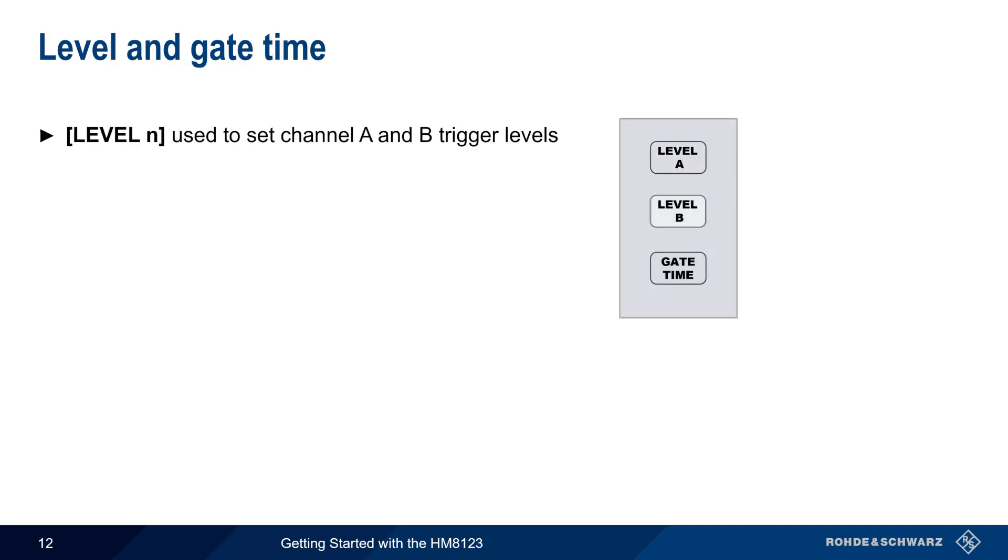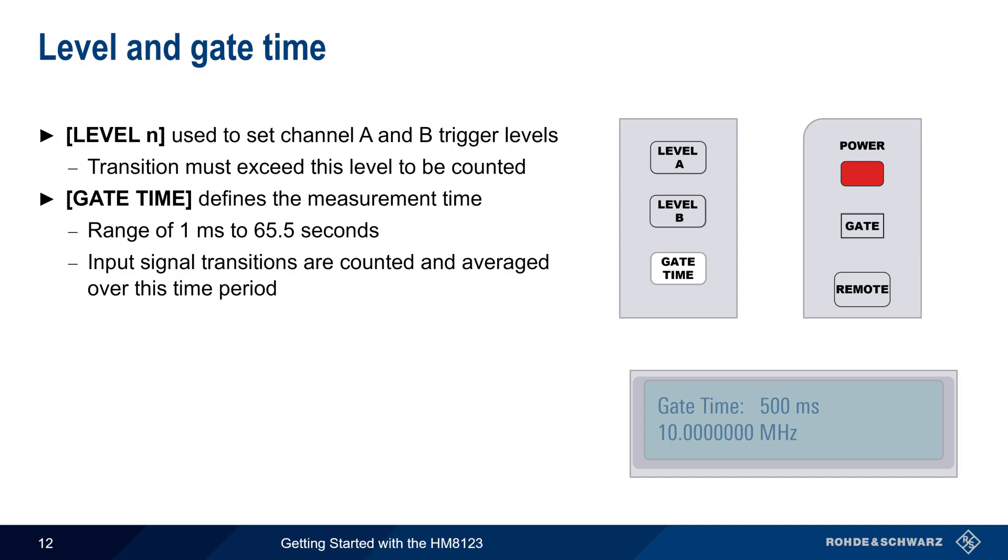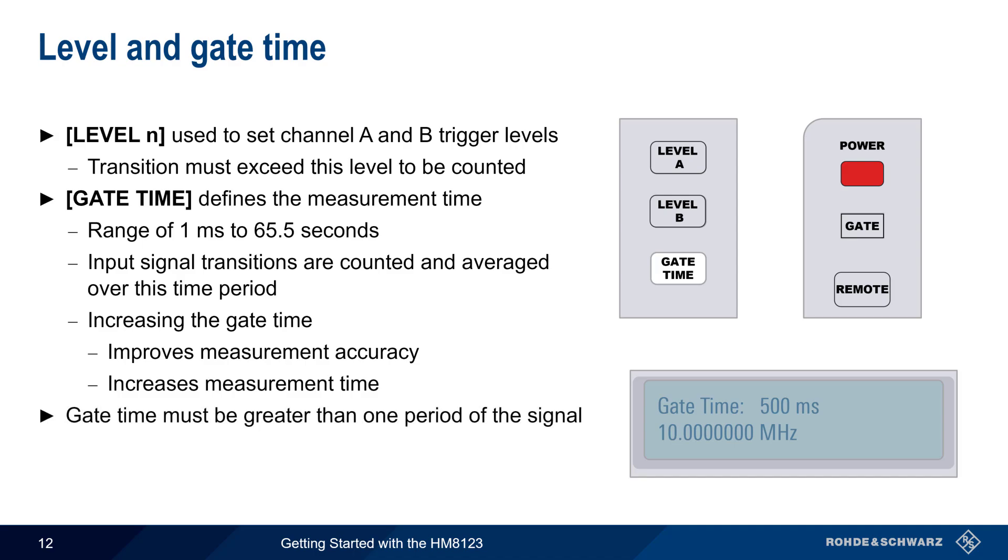The level A and level B keys are used to set the channel A and channel B trigger levels. The measured voltage transition must exceed this level to be counted. Gate time can be set to the range of 1 millisecond to 65.5 seconds. Input signal transitions are counted and averaged over this time period. Increasing the gate time will improve measurement accuracy, but will also increase the time needed to obtain a measurement result. Note that the gate time must be greater than one period of the signal. When the gate is open, the gate LED beneath the power button will be illuminated. So it's normal to see this light flashing during operation.